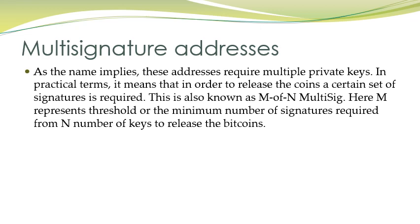Some transactions require multiple private keys — they need to be signed by multiple private keys. In practical terms, this means that in order to release the coins, a certain set of signatures are required. This is known as M-of-N multi-signatures. Here, M represents a threshold — the minimum number of signatures required from N number of keys to release the Bitcoin. For example, if there are 10 private keys and 3 keys are essential to sign the transaction, then N is 10 and M is 3, and that transaction must be signed by 3 private keys.